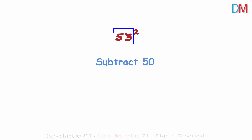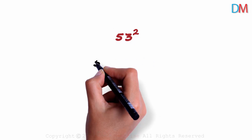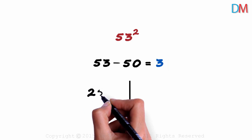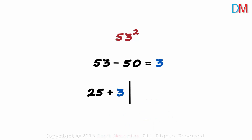First, we simply subtract 50 from that number. So we have 53 minus 50 — the difference is 3. After we find the difference, we make a partition. On the left, we just add this difference to 25. So we write 25 plus 3 on the left. If the number is close to 50, this number on the left will always be 25.